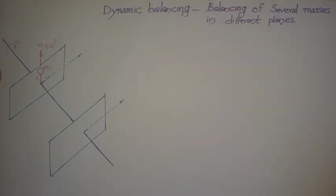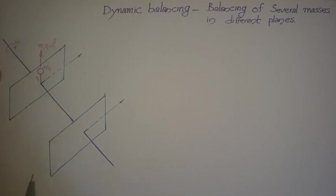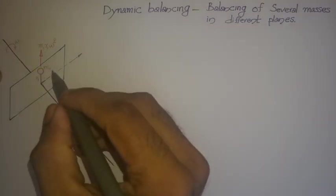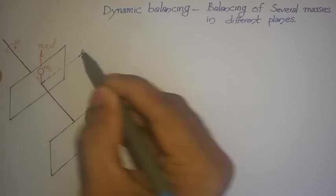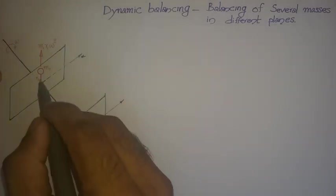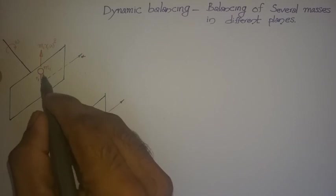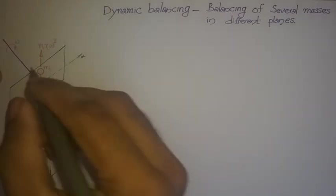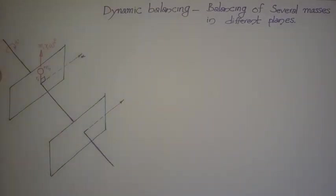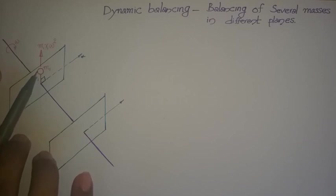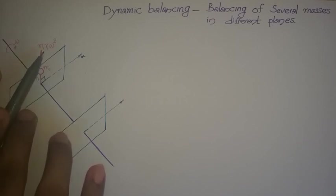Here you can see a shaft is shown with a rotating plane considered. In that rotating plane, the reference axis is shown as the x-axis. Within that rotating plane, a mass m1 is placed at a radius of r1 at an angle of 90 degrees with respect to the reference axis.